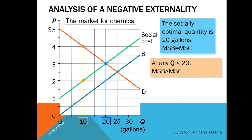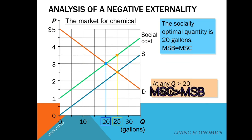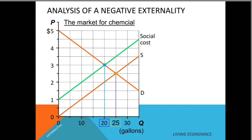Let's see why this market is inefficient if it produces less than or more than the optimal quantity of 20. At 10 gallons, marginal social cost is only $2 while marginal social benefit is $4 — so marginal social benefit is greater than marginal social cost, and the market tends toward efficiency by producing more. At 25 gallons, marginal social cost is $3.50 which is greater than marginal social benefit of $2.50, so 25 gallons is not the right amount.